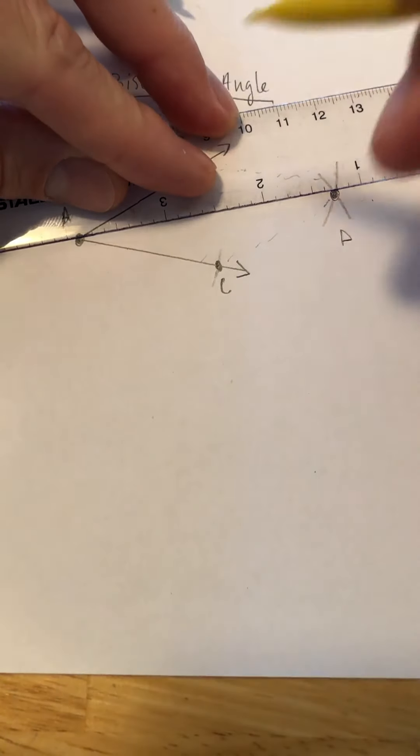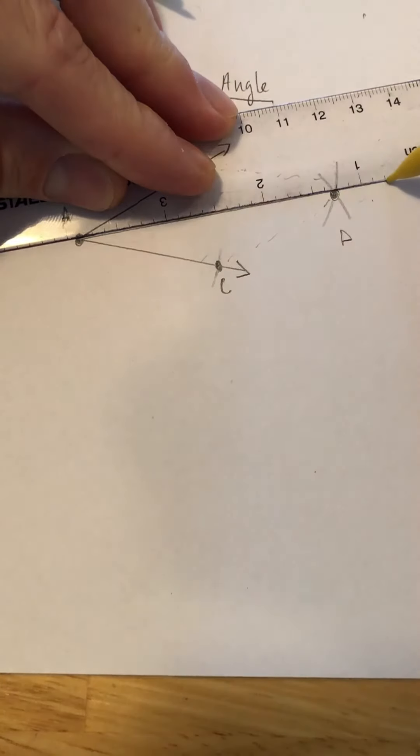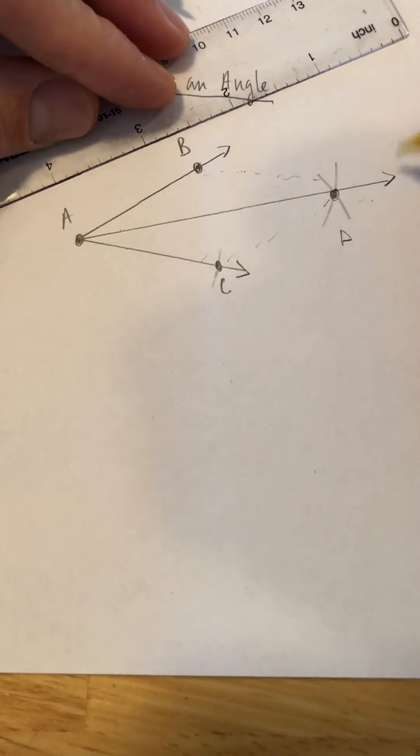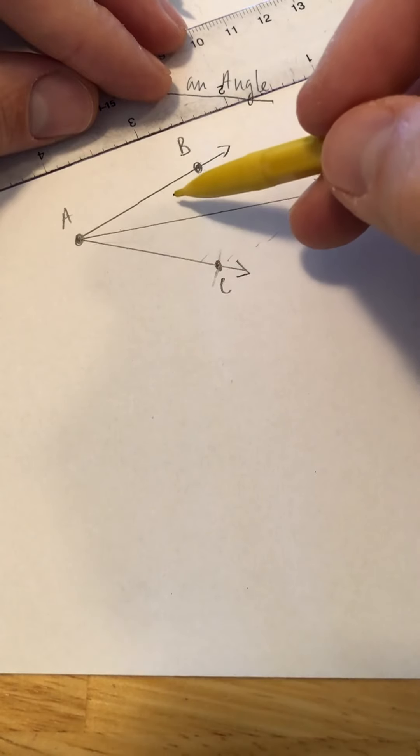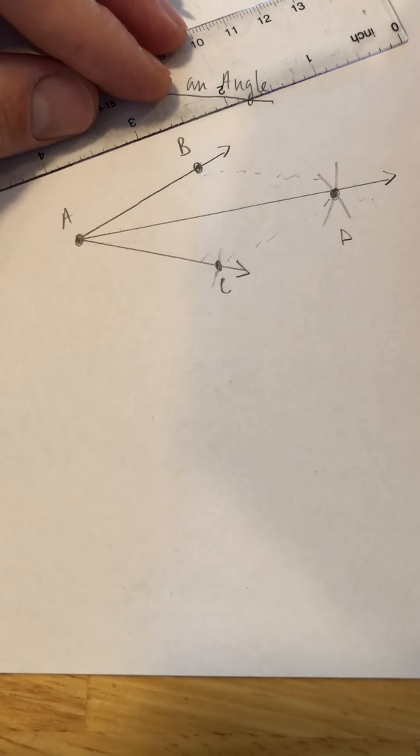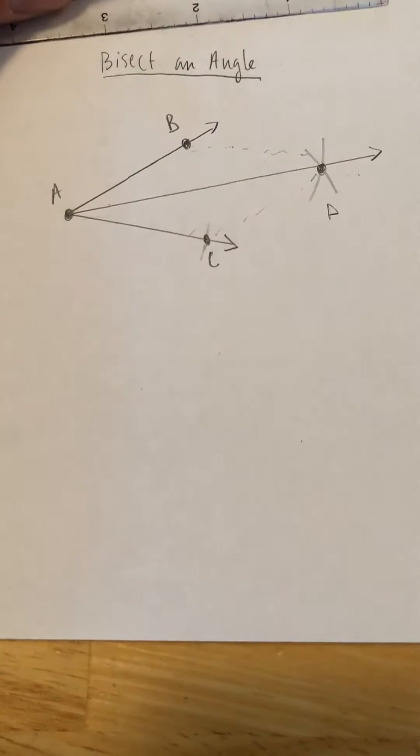It's a ray that'll start from A, the vertex, and go out. And so these two angles right here are the same, exactly the same measure. That's bisecting an angle.